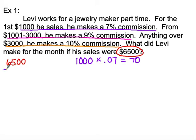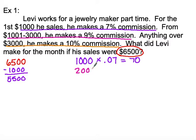Now I'm going to take off that first $1,000 to see how much he has left. So we have $5,500 left to calculate. For the next level, $1,001 to $3,000, that's $2,000 worth of sales. He's going to make 9%, which is his second level, and that's going to calculate out to be $180.